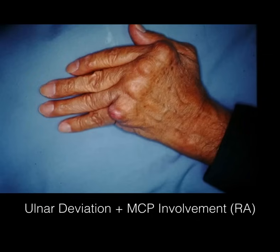Here we have ulnar deviation and involvement of the MCPs — this is classic of rheumatoid arthritis. Not pictured, but something to keep in mind: if it were osteoarthritis, there would be involvement of the DIPs.